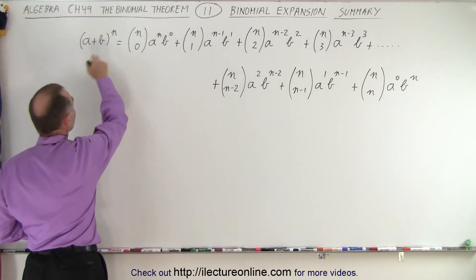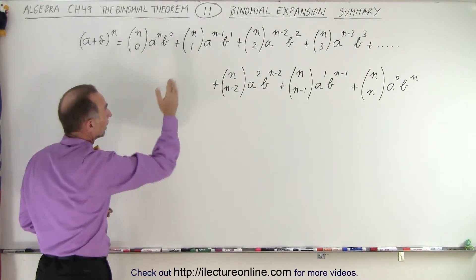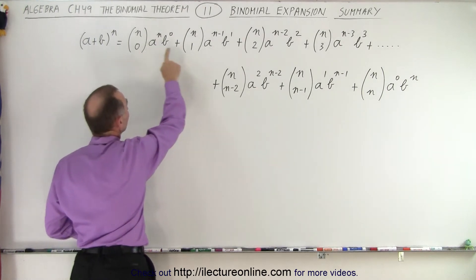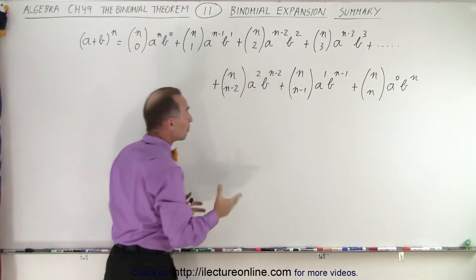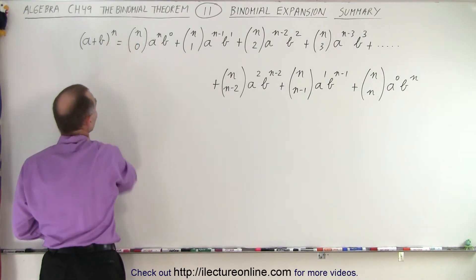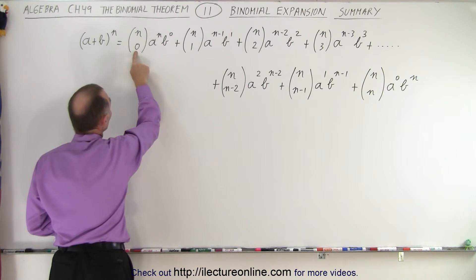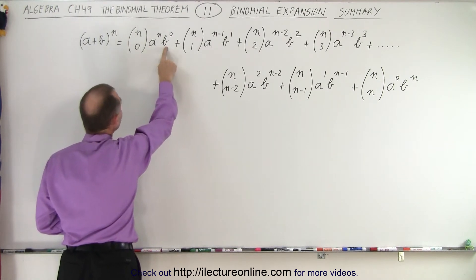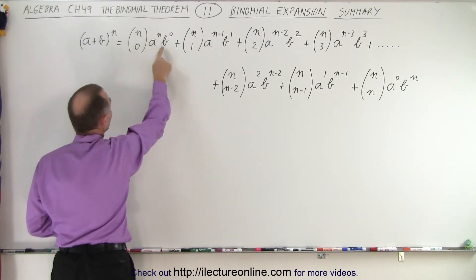When we have something like a plus b to the n power, we can write it out like this. Here we can see that these are the numerical coefficients. The numerical coefficients are found by setting the top number equal to the exponent of the binomial, and the bottom number is going to be the exponent of the b, the second term in the binomial.